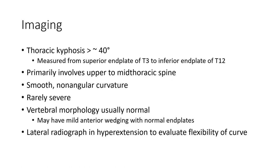Imaging: thoracic kyphosis greater than 40 degrees, measured from the superior endplate of T3 to the inferior endplate of T12. It primarily involves the upper to mid-thoracic spine with a smooth, non-angular curvature. Vertebral morphology is usually normal, and there may be mild anterior wedging.